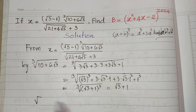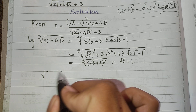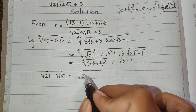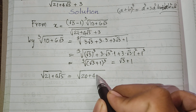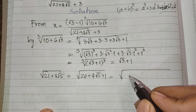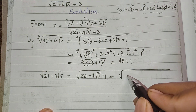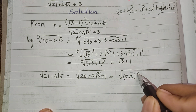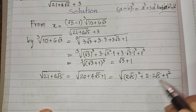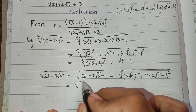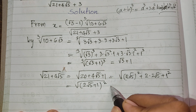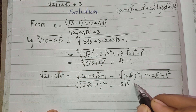Now for the denominator term: the square root of (21 plus 4√5). I can rewrite 21 plus 4√5 as 20 plus 4√5 plus 1, which equals (2√5 plus 1) squared. So the square root of (21 plus 4√5) equals 2√5 plus 1.